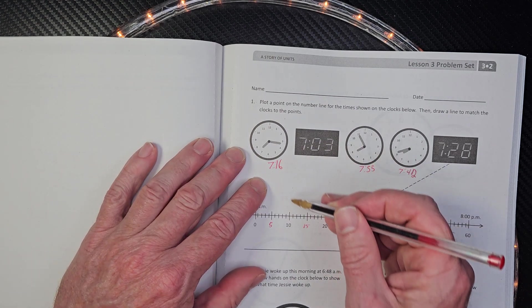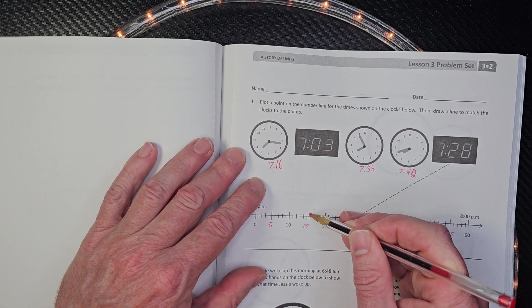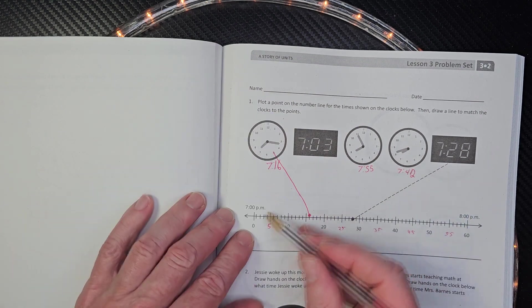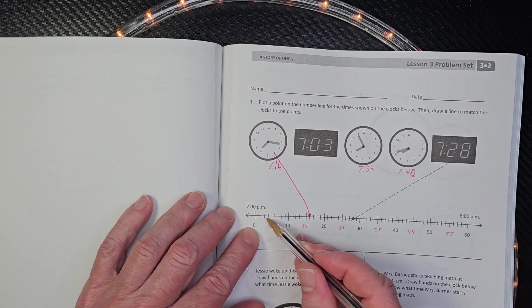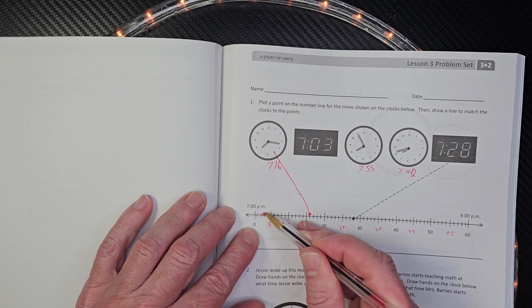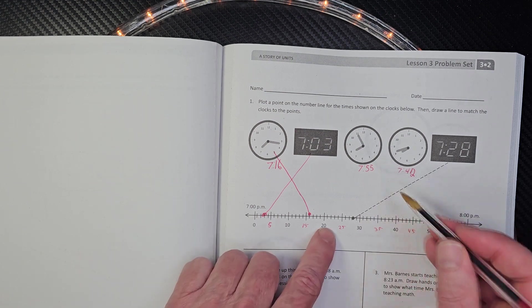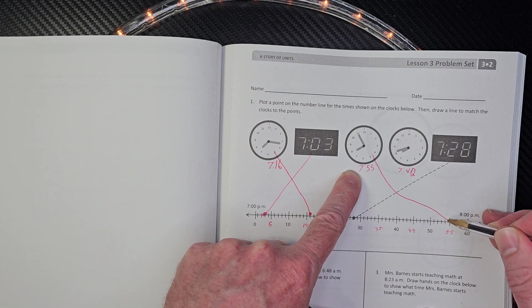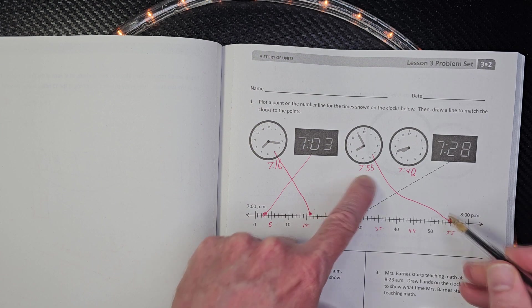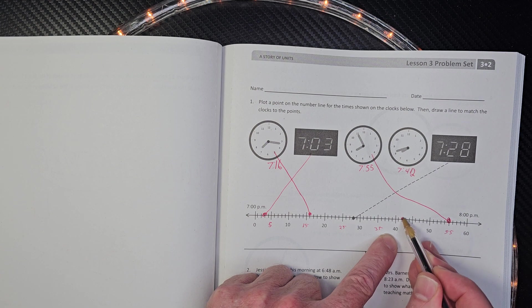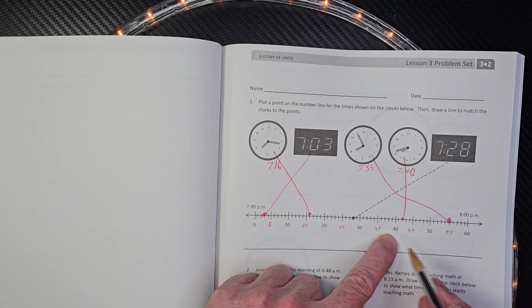So 7, 16 would come right after 7, 15. 703. 1, 2, 3, 4, 5. 1, 2, 3. Right here. You can do the sound effects if we want to. 755. That one's an easy cheesy one right here. Right there. 7, 42. Here's 40, 41, 42.